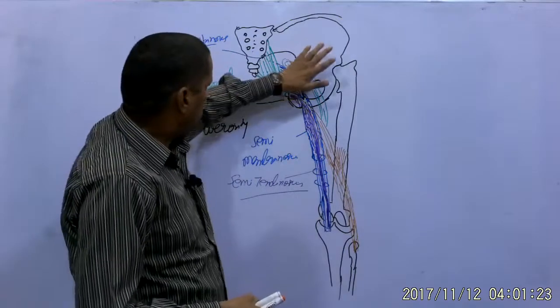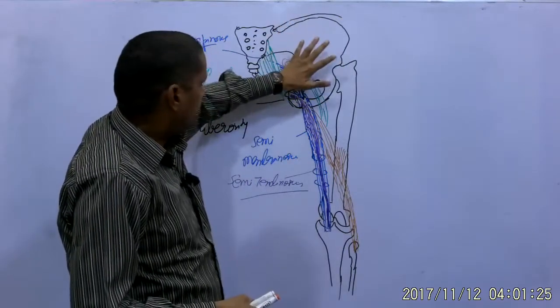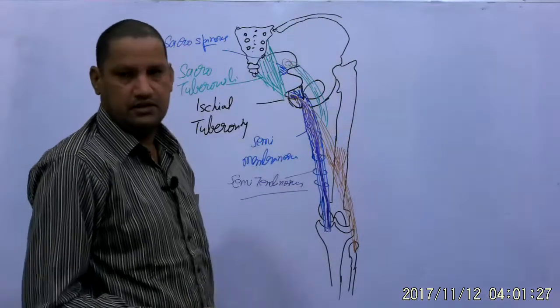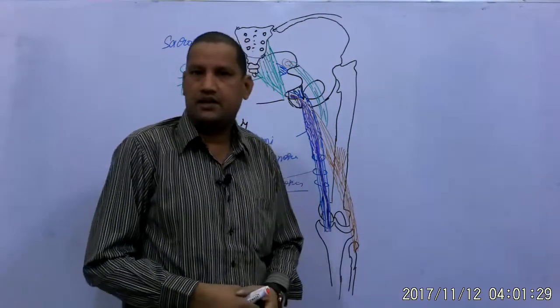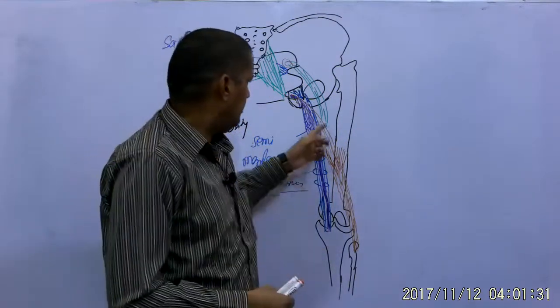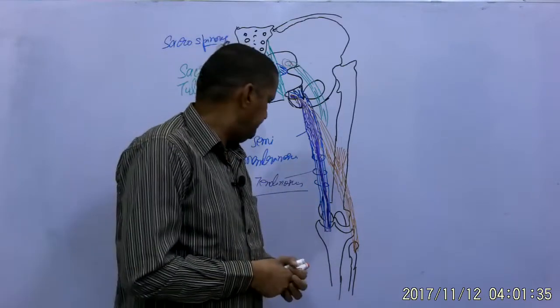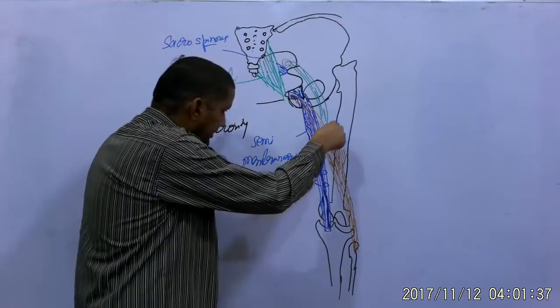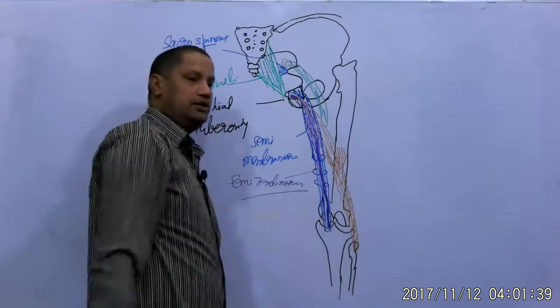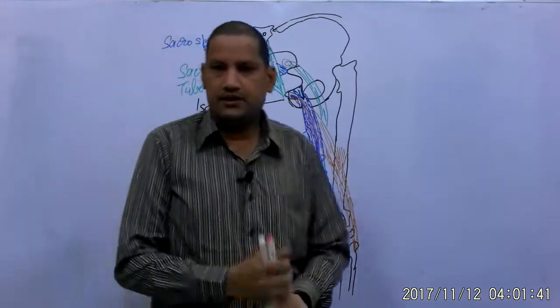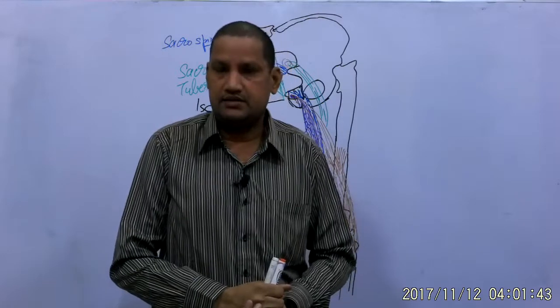The muscle is covered, the nerve is covered by gluteus maximus muscle and then it is running under cover of the long head of the biceps femoris. Then the nerve is running on the adductor magnus muscle.